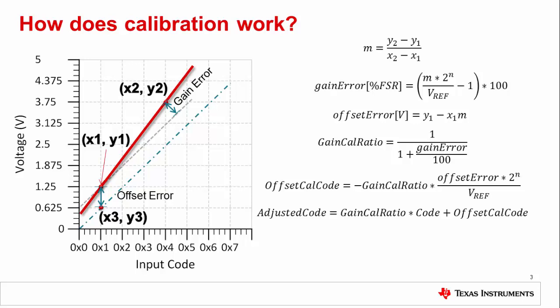Programming this routine into your digital controller will often drastically decrease your system TUE. Just remember that using this method could address a code that is out of range of your controller, like trying to address code 0x9 on a 3-bit DAC. Make sure your programming scheme takes this into account.